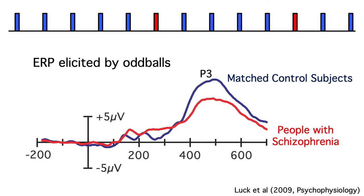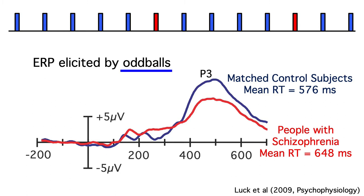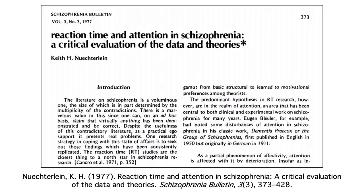Many studies have used oddball paradigms to look at the P3 wave in schizophrenia. The data shown here are pretty representative. Most studies focus on the ERPs elicited by the oddballs, and they find a reduced amplitude in people with schizophrenia compared to matched control subjects. Most of these oddball studies didn't look at response times, but we did. We found that people with schizophrenia were about 70 milliseconds slower than controls to respond to the oddballs, on average. This is consistent with tons of previous behavioral studies going back several decades — in almost any behavioral paradigm, response times are slowed in people with schizophrenia.